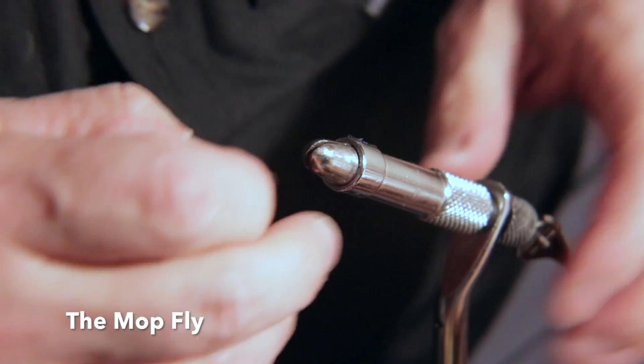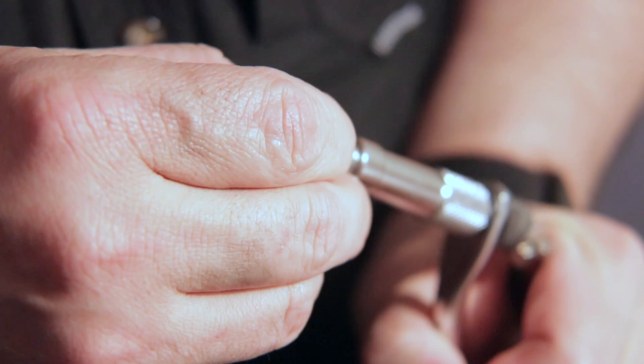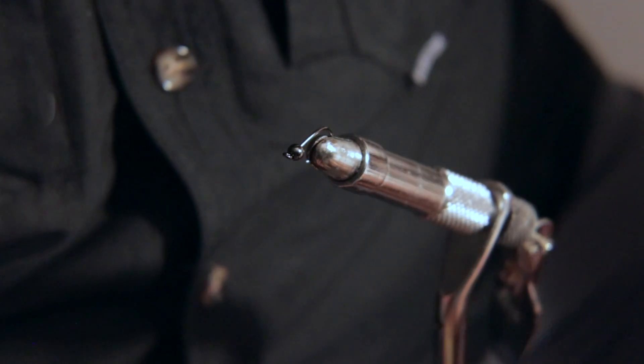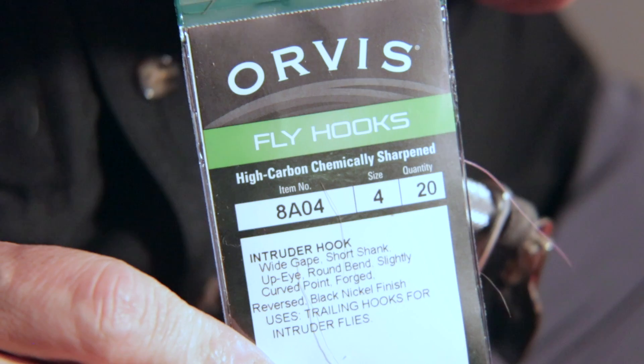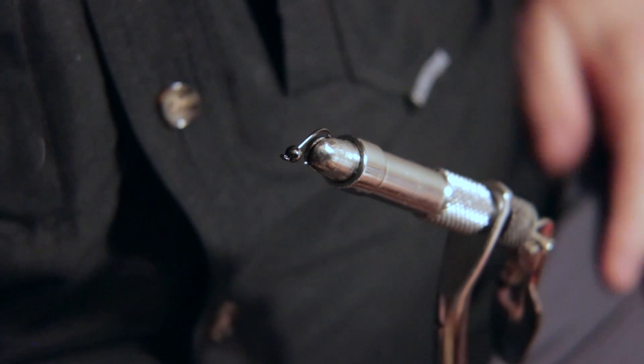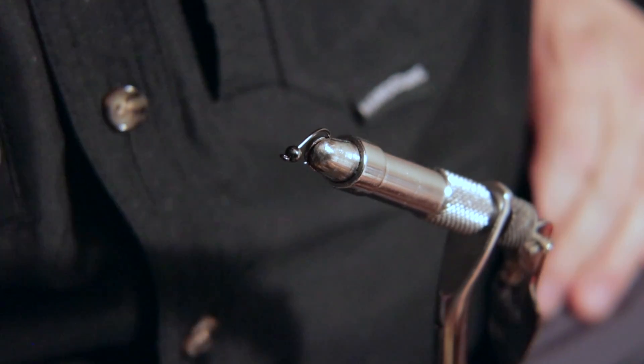Hey everybody, we're going to tie a simple mop fly tonight and I'm just using a pretty standard size 4 hook. It has a little bit wider gap. It's just a simple Orvis hook, an intruder hook. It's one that I use for a lot of my flies. I like to have a hook that's more circle-esque in style.